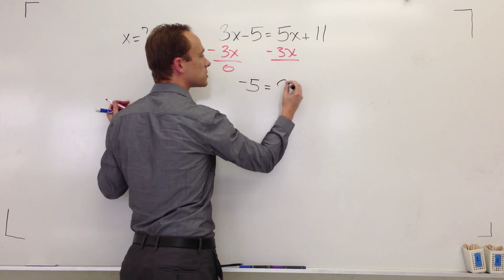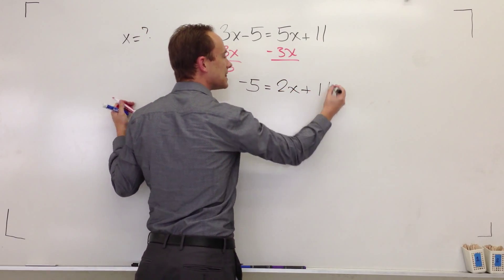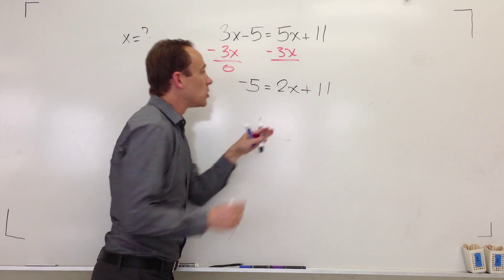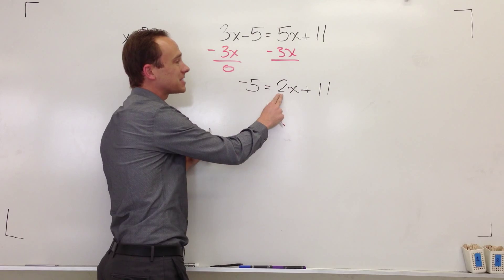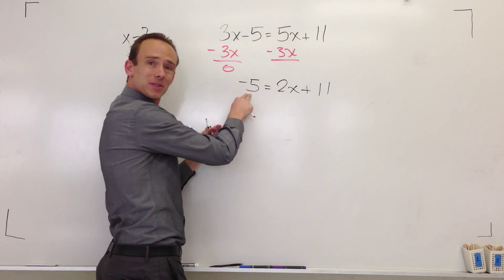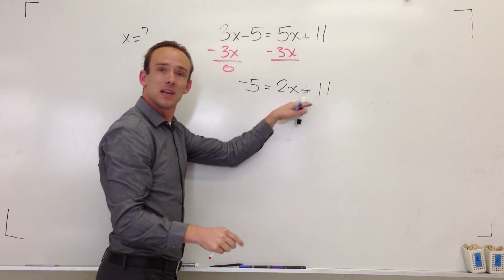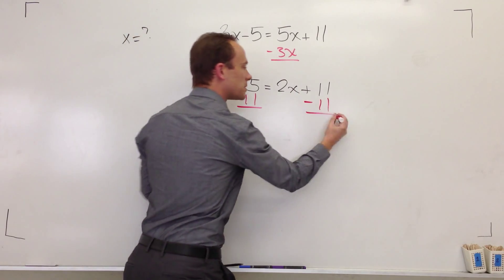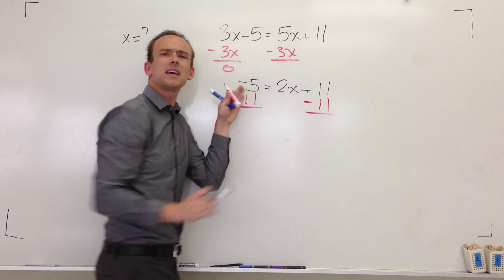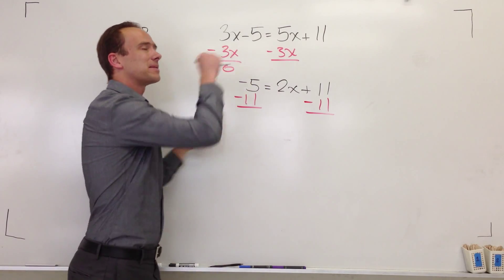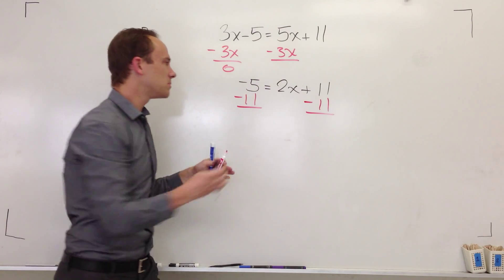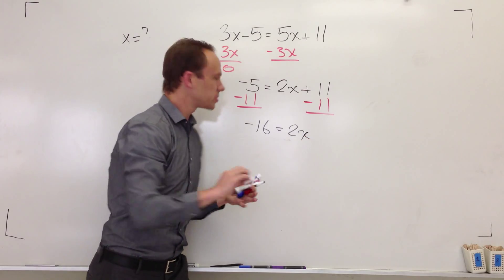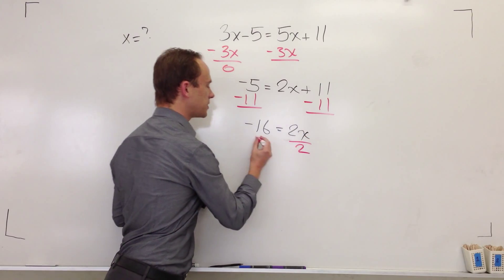Negative 5 is equal to 2x plus 11. We got this! You want to get x all by itself. Right now, you're multiplying x by 2 and adding 11, and the result is negative 5. So let's get rid of that add 11 — let's subtract 11 from both sides. Negative 5 minus 11: take away 5 and then take away 11 more gives me negative 16 is equal to 2x.